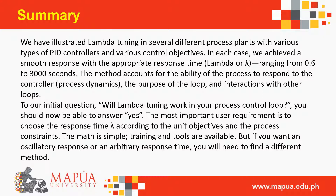Lambda tuning has been illustrated in several different process plants with various types of PID controllers and control objectives. In each case a smooth response was achieved with the appropriate response time lambda, ranging from 0.6 to 3000 seconds. The method accounts for the process's ability to respond, the purpose of the loop, and interactions with other loops. To the question 'will lambda tuning work in your process?' — the answer is yes, provided you choose the response time according to unit objectives and process constraints. If you want an oscillatory or arbitrary response time, a different method is needed.